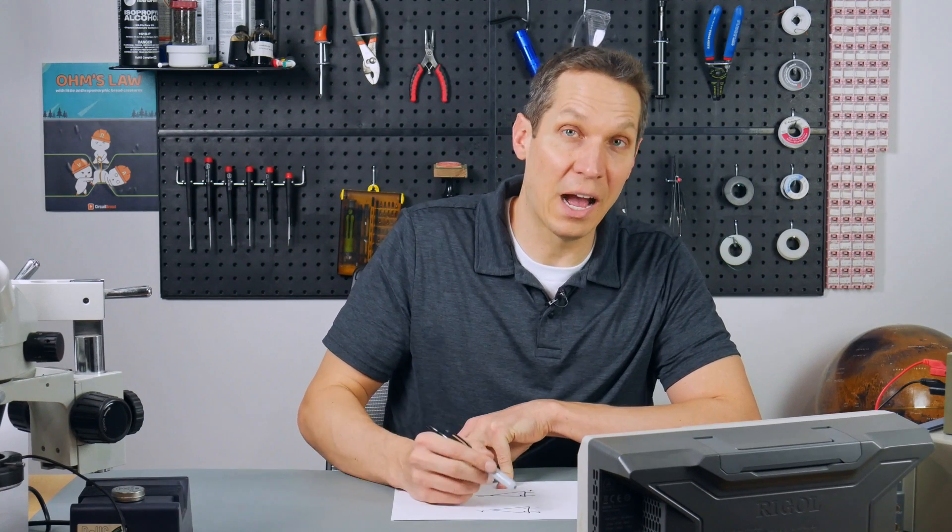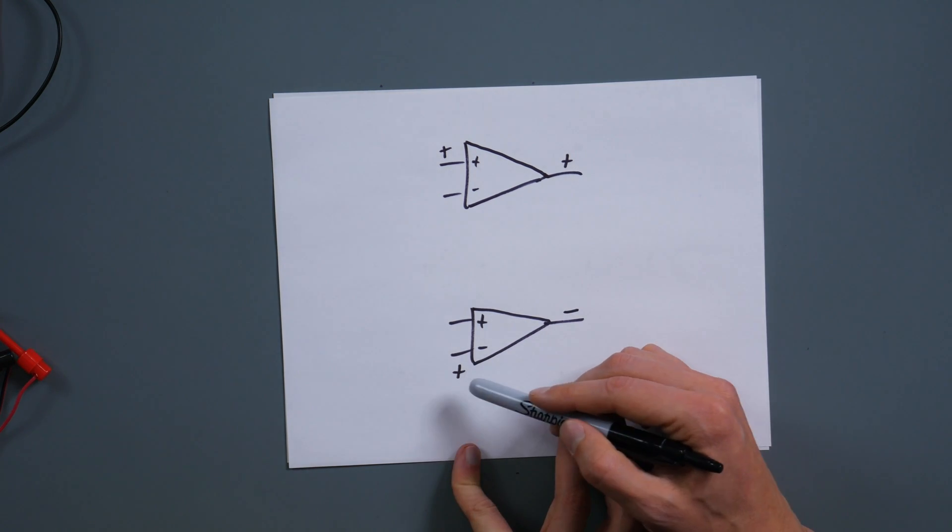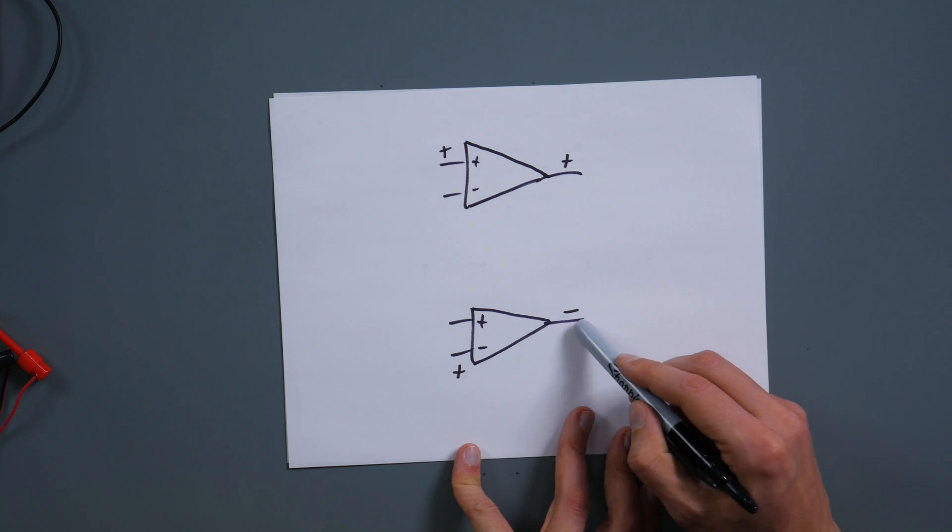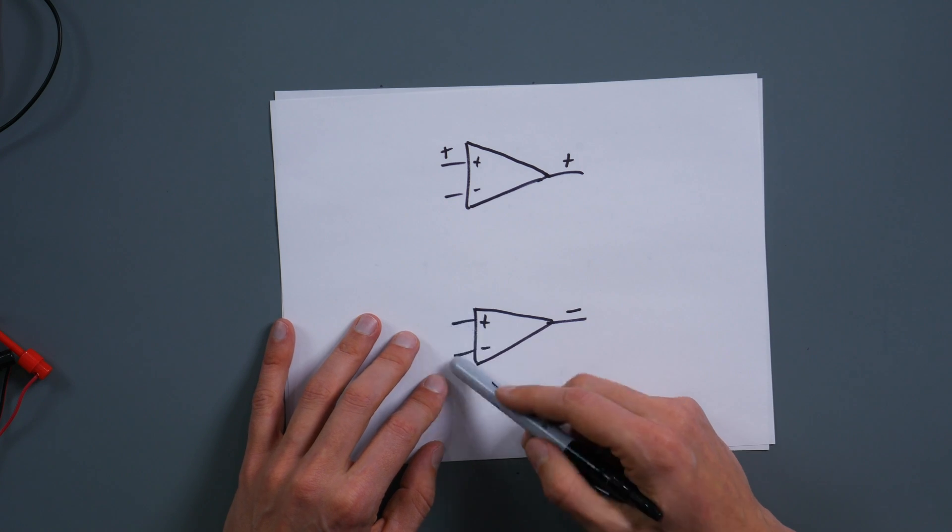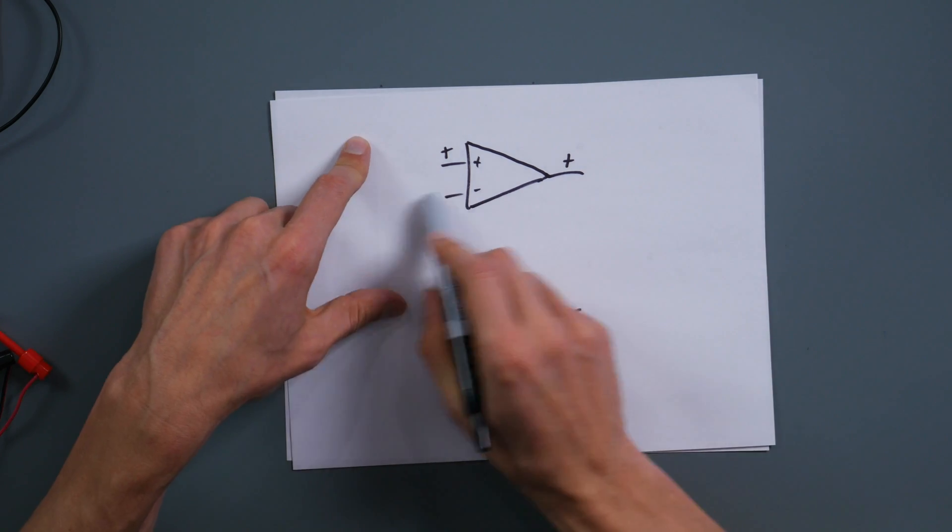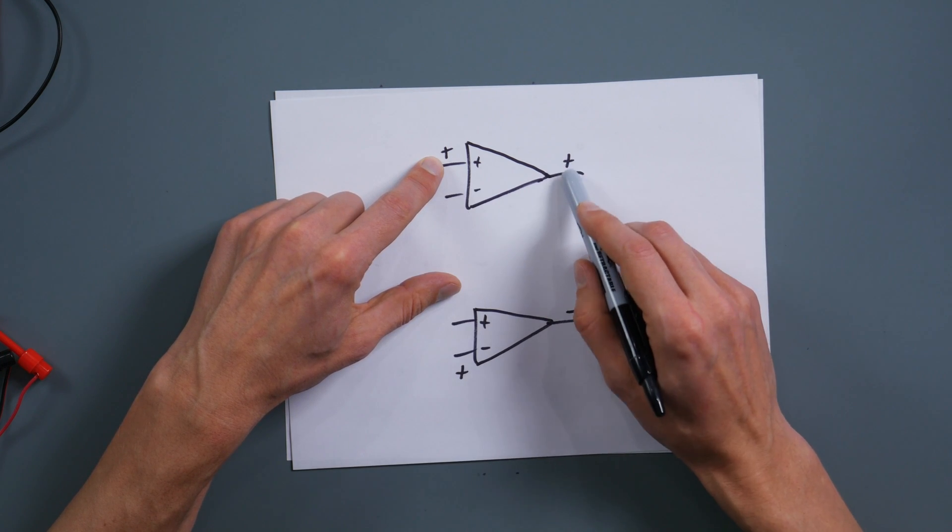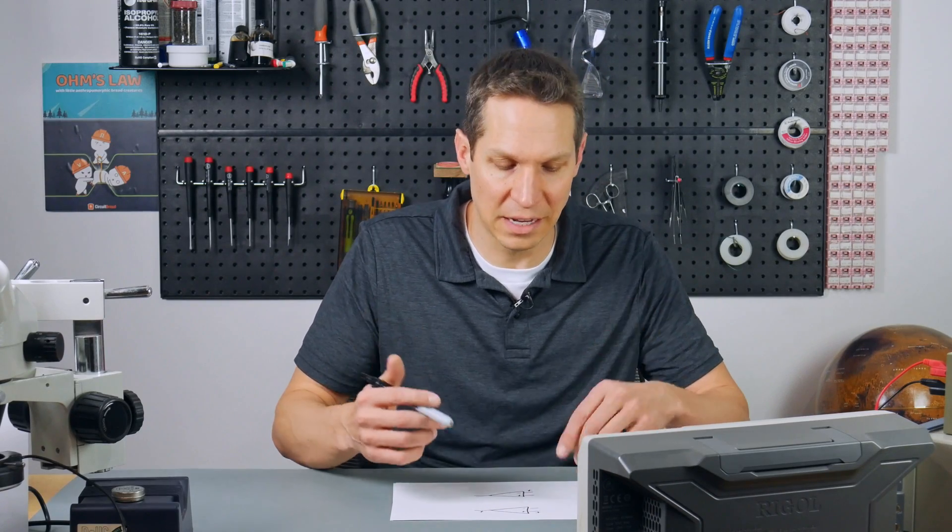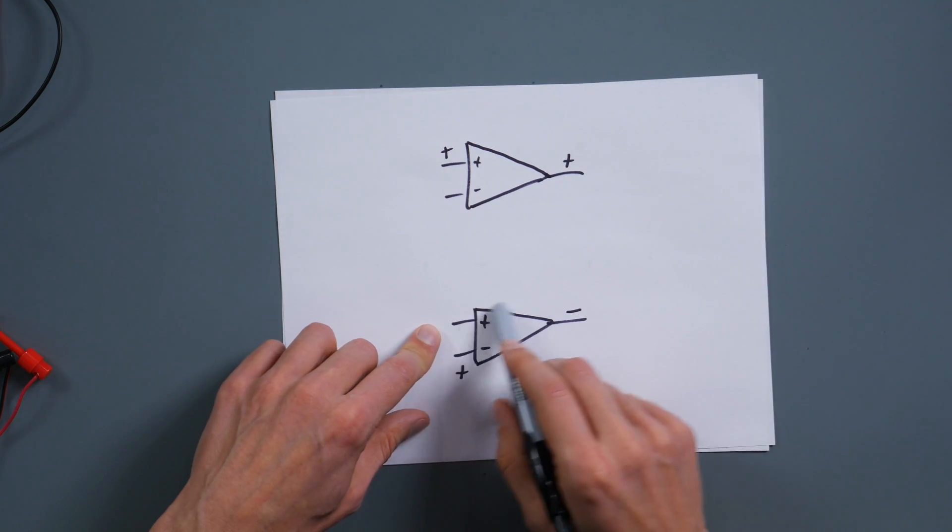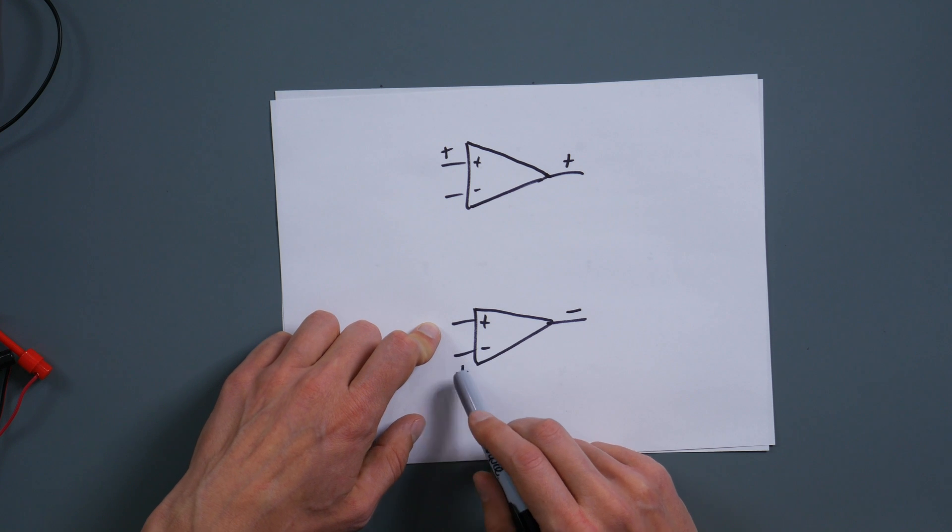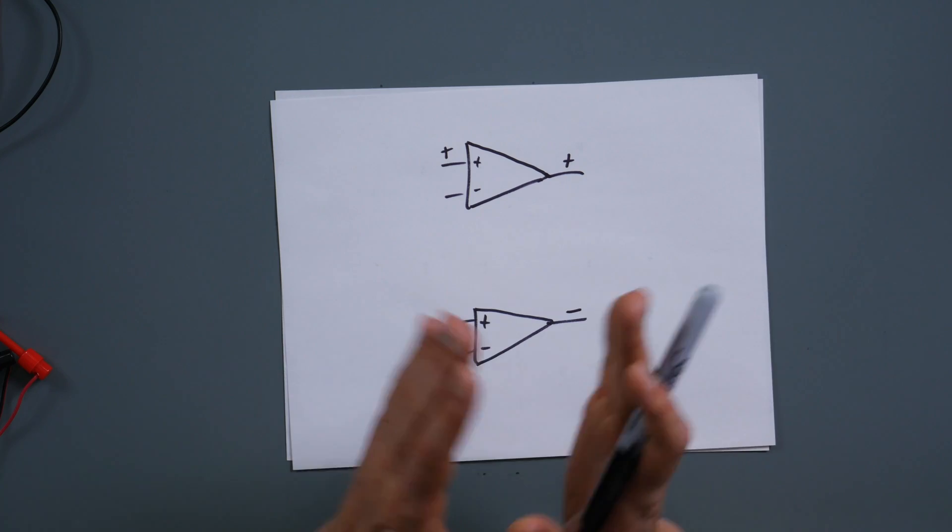So what that means is that when you have a higher voltage on your positive or your non-inverting input, then you have a high voltage coming out of your output. Whereas if you have a higher voltage on your inverting or your V negative to your op amp, then you get a negative voltage on the output. The reason it's doing this is because your output is almost always attached to one of the inputs, and it's trying to drive those inputs so that they have the same voltage.